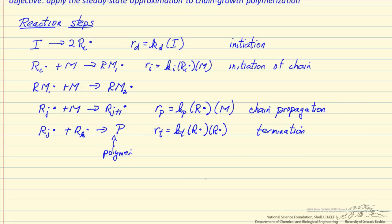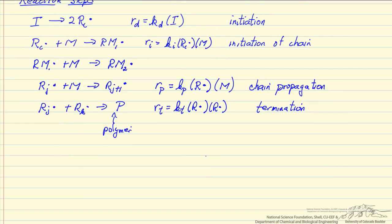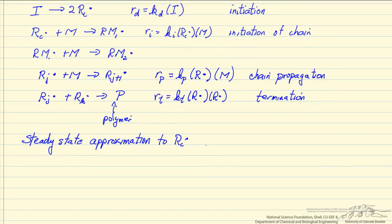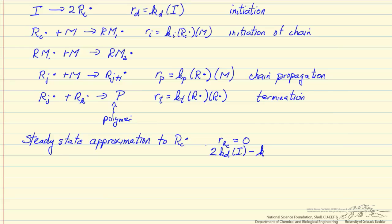We apply the steady state approximation to the primary radical r_c formed from the initiator. The steady state approximation says the net rate of r_c is equal to zero — as fast as we make r_c, we react it away. We make it in the initiation step, with a stoichiometric factor of two, and use it up in the second step. Rate of formation minus rate of consumption equals zero, which lets us calculate the concentration of this primary radical.